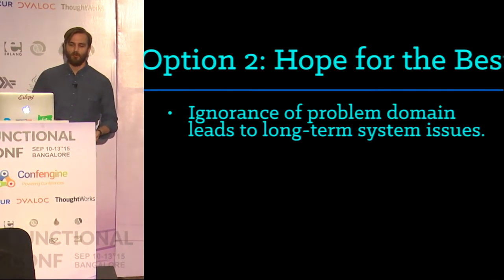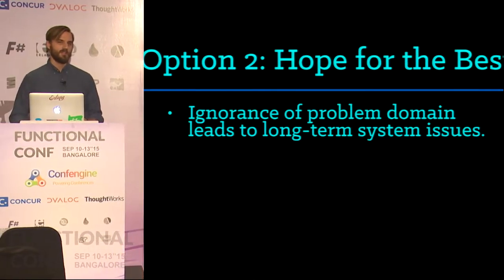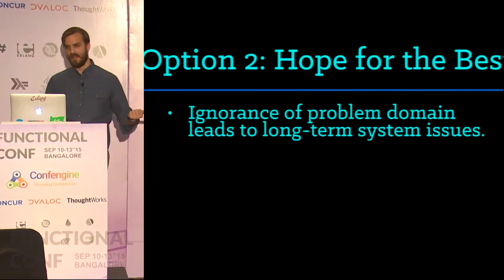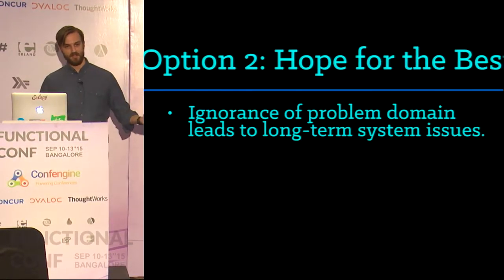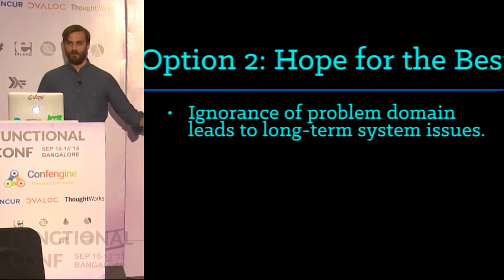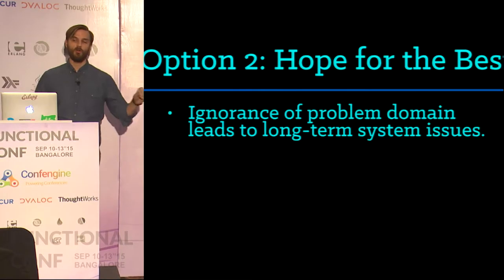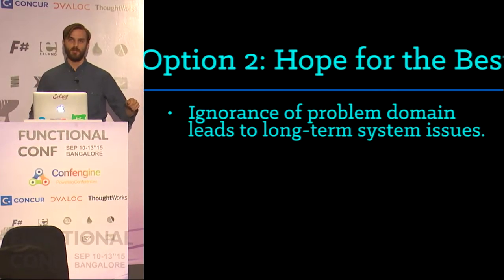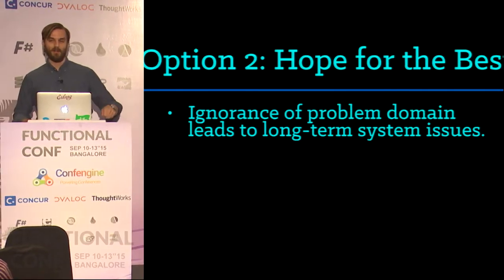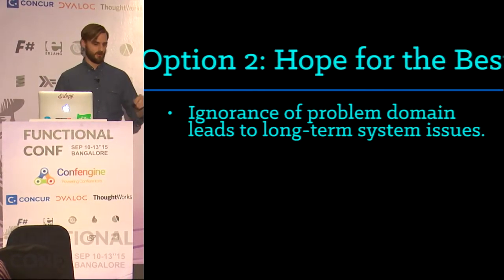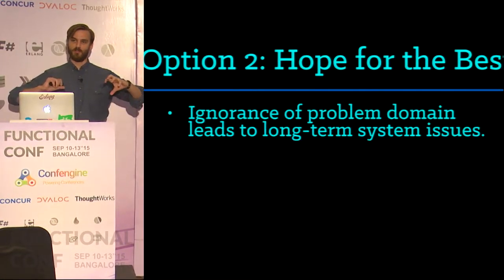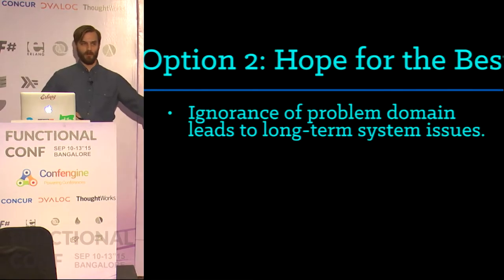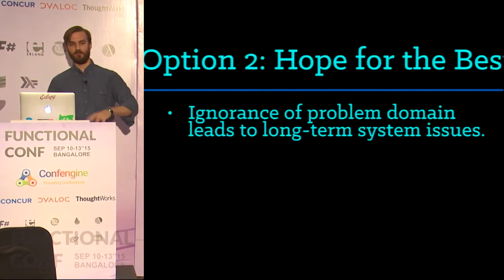The problem with hoping for the best is that ignorance of the problem domain leads to long-term system issues. Facebook is a great example — they were able to get by for a long time with a relatively small staff of PHP coders, and now they have some of the world's best Haskell programmers, C++ engineers, and engineers for D and Go, because they have these long-term technical issues that must be resolved. The Haskell coders are all working on compilers to automatically detect faults in the PHP code base, in part because it was written so elaborately bad. These are really good problems to have because they have a boatload of money — but they wouldn't have had it if they hadn't just sort of gone forward to begin with.